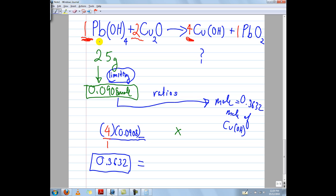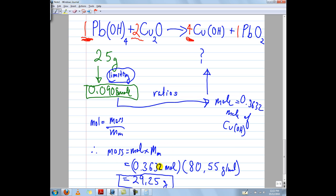Using my ratios, I was able to calculate 0.3632 moles of CuOH. Now it's just a matter of converting it back into a mass. Using the equation moles equals mass over molar mass, we algebraically rearrange so that mass equals moles times molar mass. So 0.3632 moles times 80.55 grams per mole gives you 29.25 grams. 29.25 grams of the CuOH is produced. And that is our final answer.